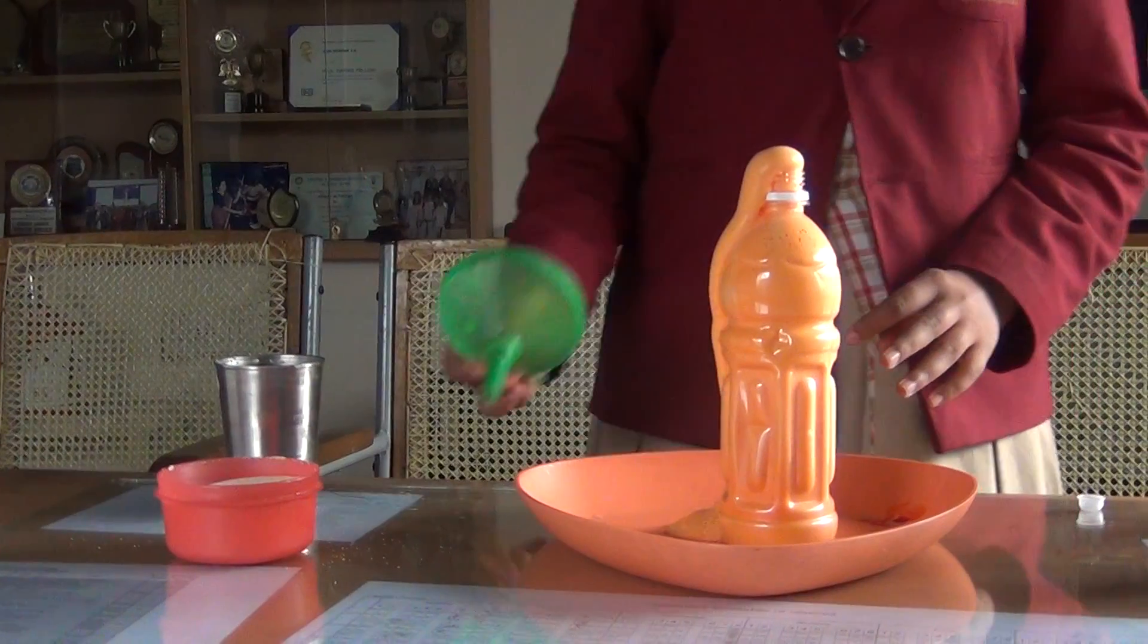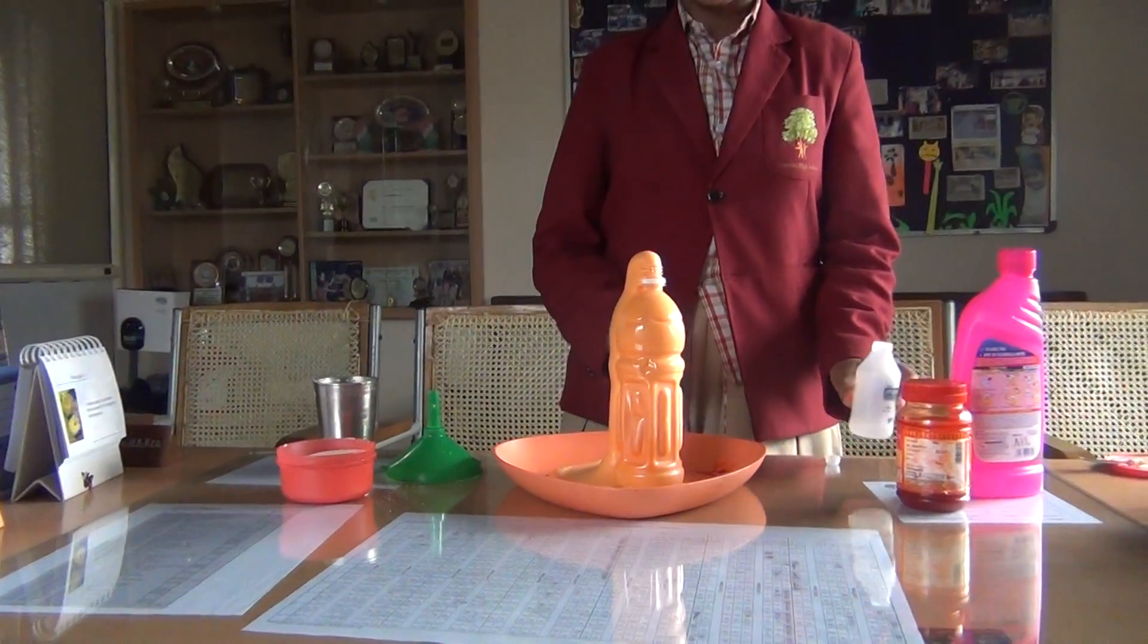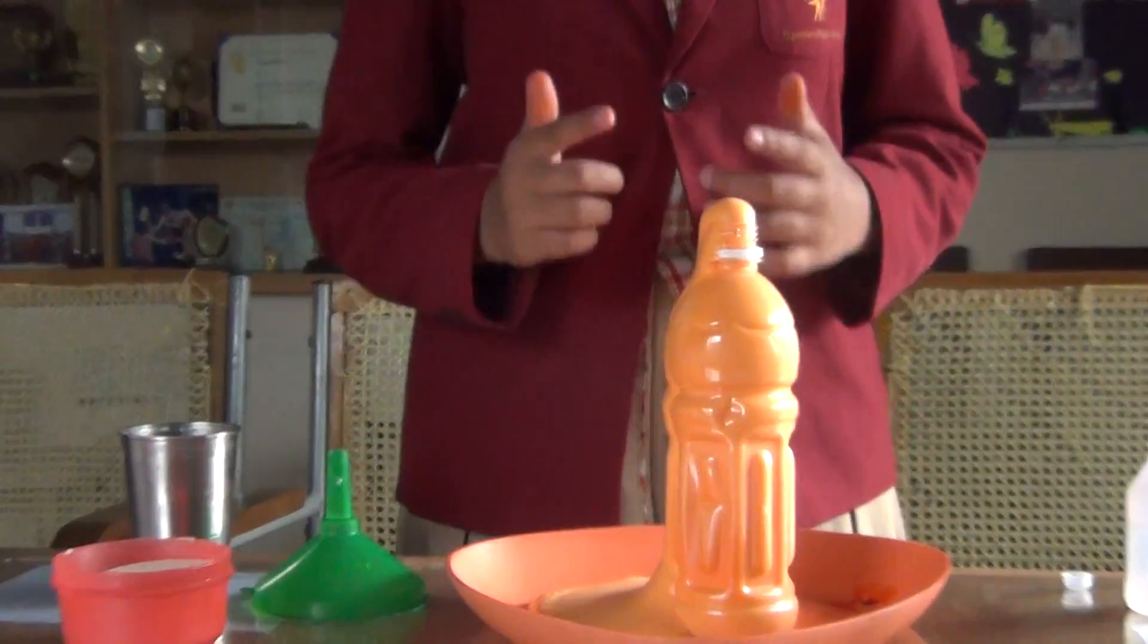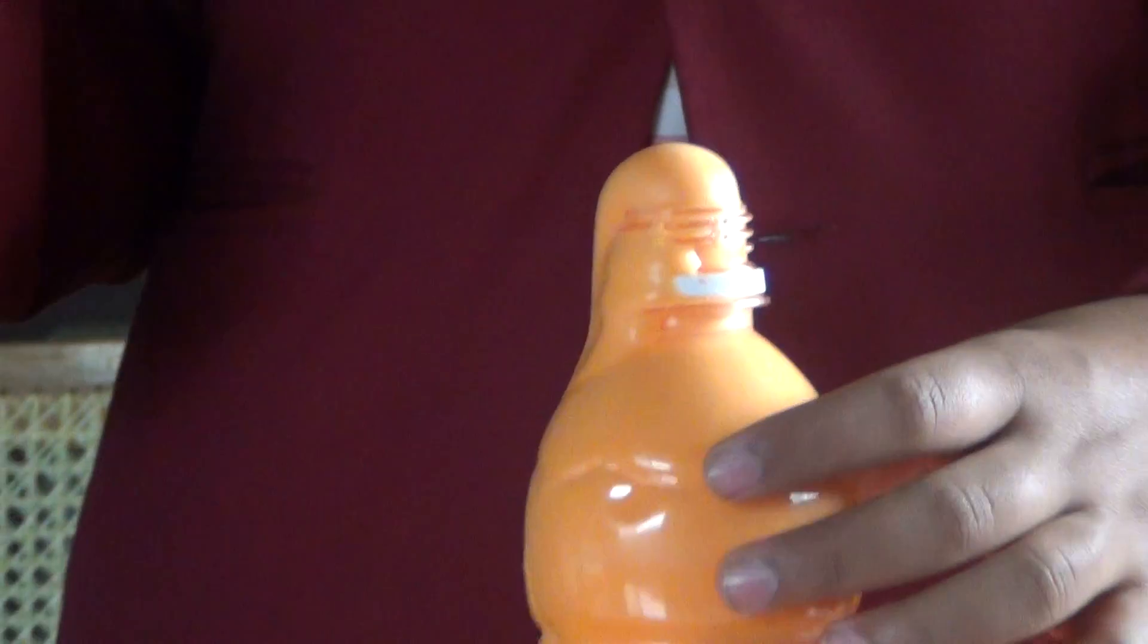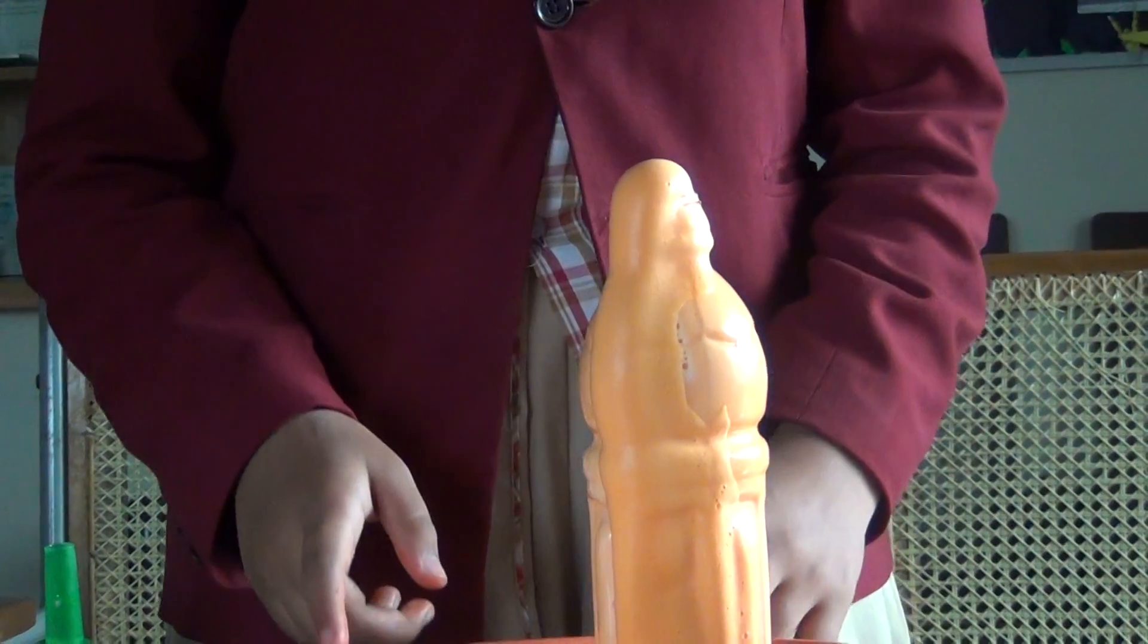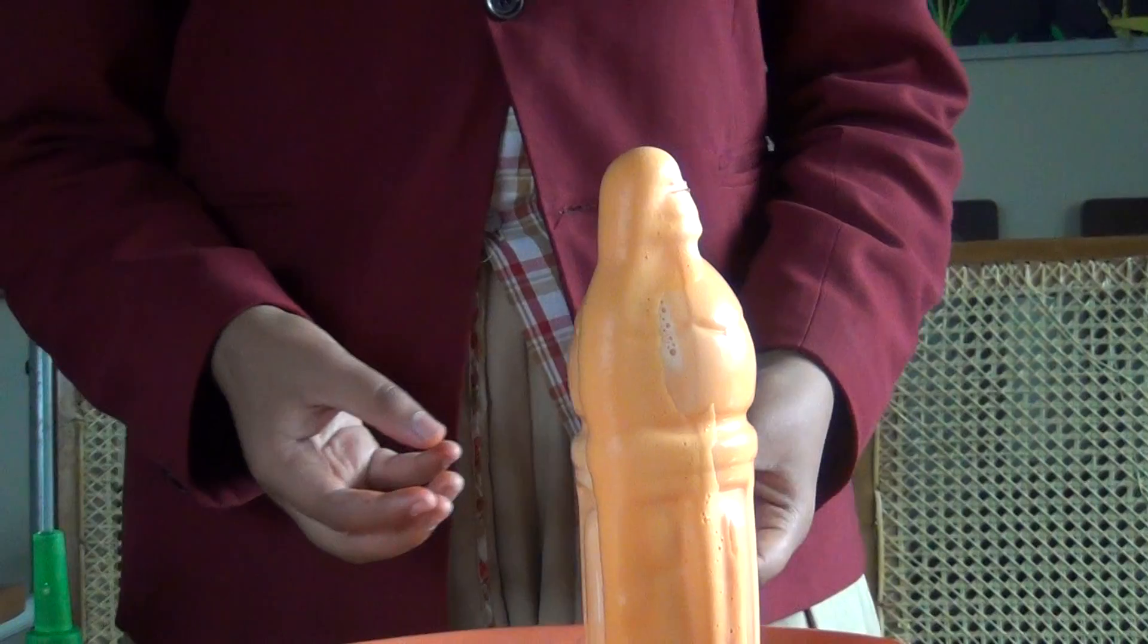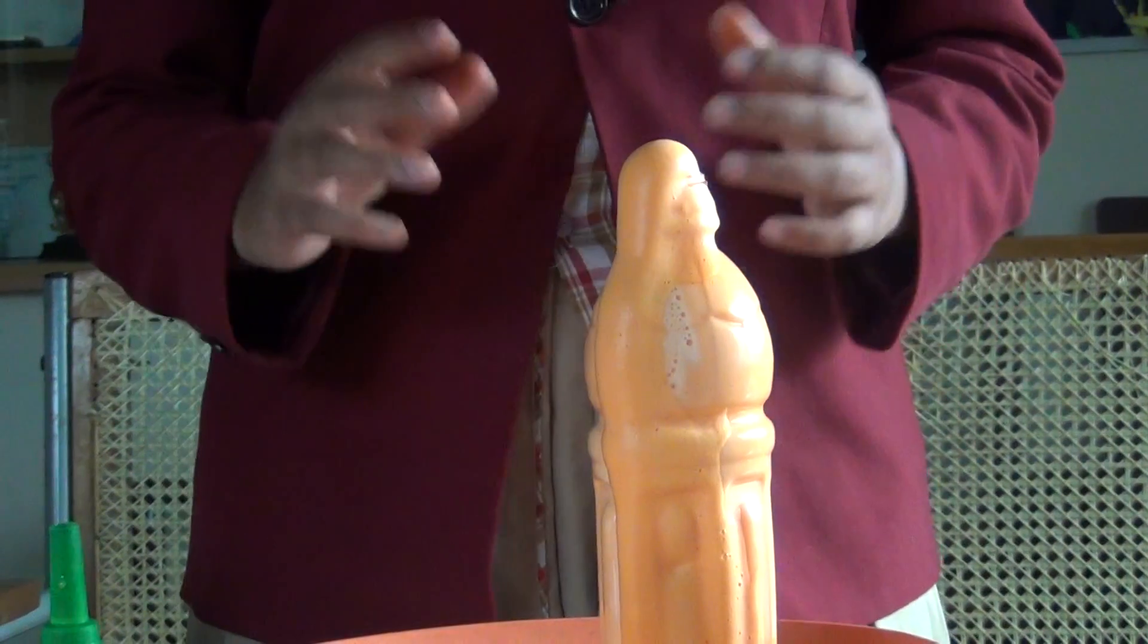Elephant toothpaste is a foamy substance formed because of rapid decomposition of hydrogen peroxide. The reaction happens so because yeast acts as the catalyst which speeds up the reaction. Whereas oxygen is rapidly escaping from the mixture creating foam. Foam is a substance formed containing many bubbles. This is an exothermic reaction which releases more heat. And thank you.